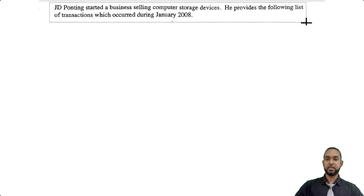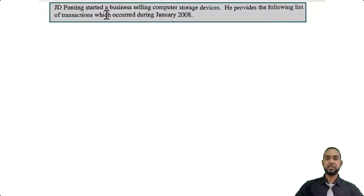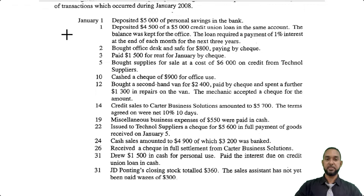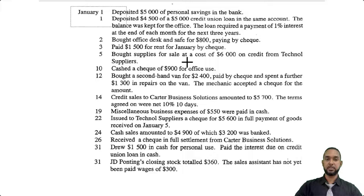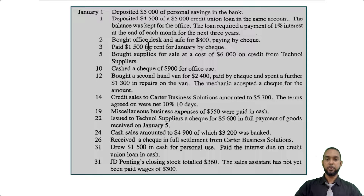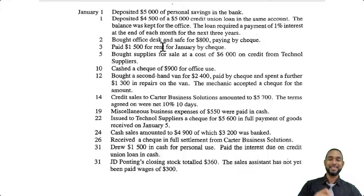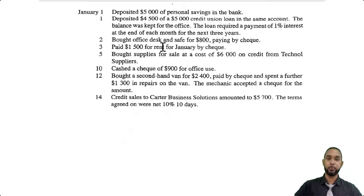They start off by telling us that JD Ponting started a business selling computer storage devices. He provides the following list of transactions which occurred during January 2008. So instead of going through them one by one and just talking through them, I'm going to pull up the cashbook and enter the information as we go through the transactions one by one.